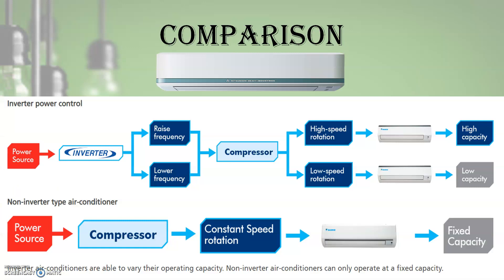Now let us see the comparison. The inverter power control and non-inverter power control are shown here. In the non-inverter type, the compressor motor always runs at a fixed speed and fixed capacity, and temperature is adjusted by turning the compressor motor on and off. In an inverter power control, there is an added inverter which can vary or control the frequency and thereby control the motor speed.